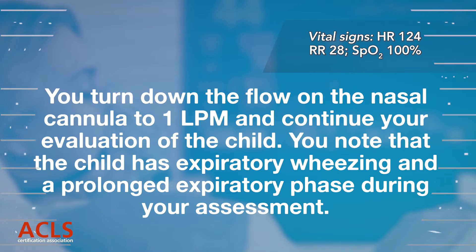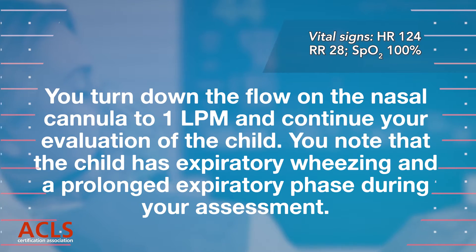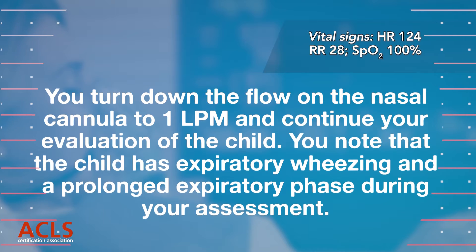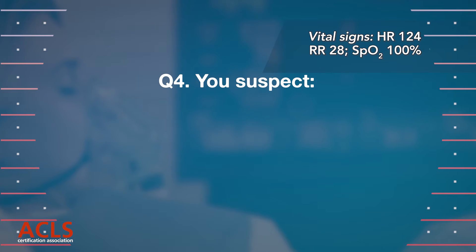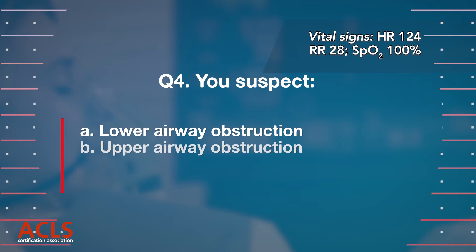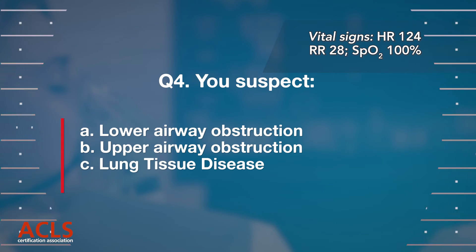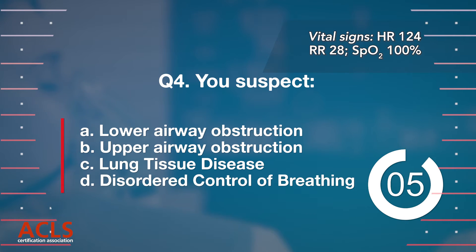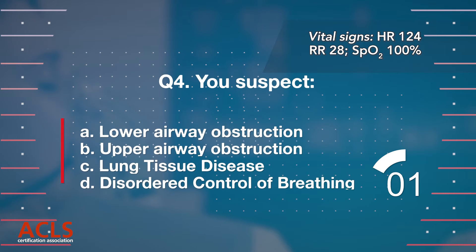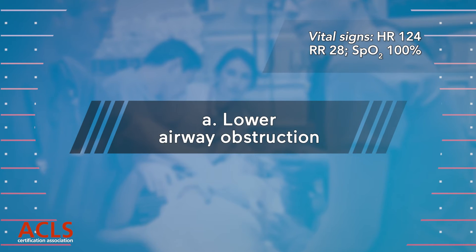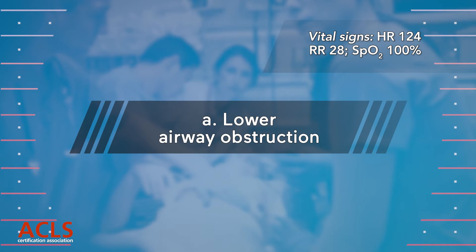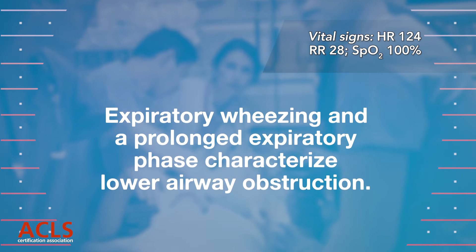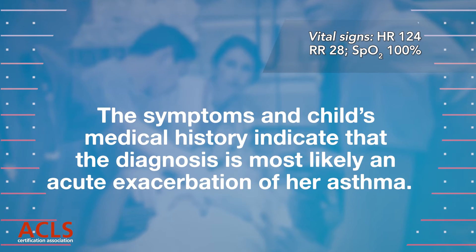You note that the child has expiratory wheezing and a prolonged expiratory phase. Question 4: You suspect: A) Lower airway obstruction; B) Upper airway obstruction; C) Lung tissue disease; D) Disordered control of breathing. Correct answer A — Lower airway obstruction. Expiratory wheezing and a prolonged expiratory phase characterize lower airway obstruction. The symptoms and the child's medical history indicate the diagnosis is most likely an acute exacerbation of her asthma.